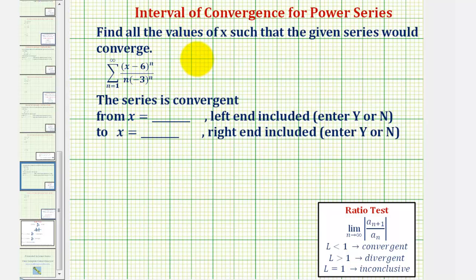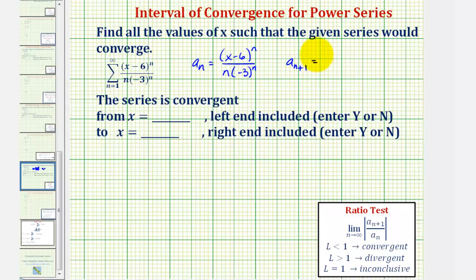So a sub n is equal to the quantity x minus six raised to the nth power divided by n times negative three raised to the nth. Therefore a sub n plus one would be equal to the quantity x minus six to the n plus one power divided by the quantity n plus one times negative three raised to the power of n plus one.